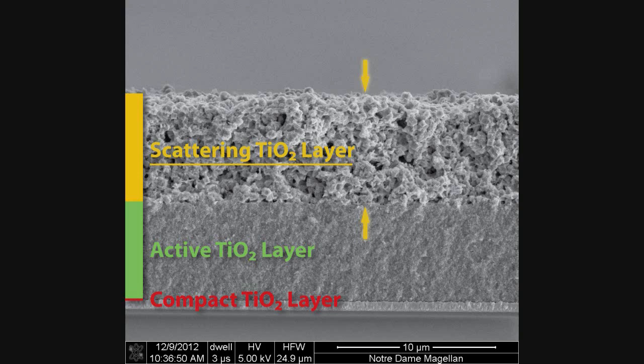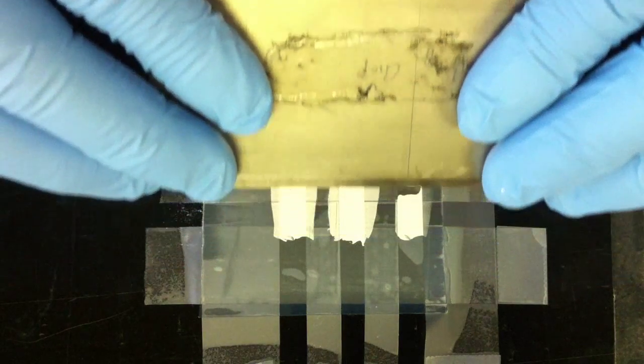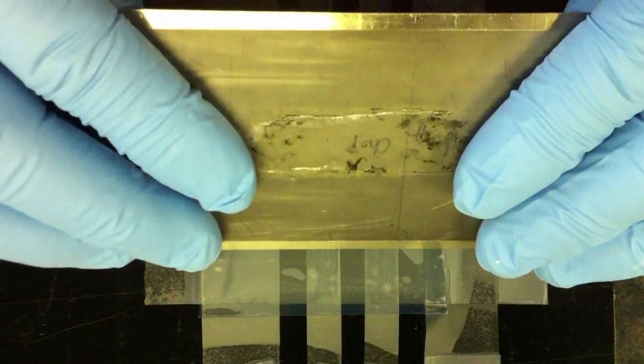The final tier in our photo anode is the scattering TiO2 layer. This layer provides backscattered photons for our quantum dot light absorbers in our active area. Again, we use the doctor blade technique to cast this film, marking a spot slightly bigger than our active area.